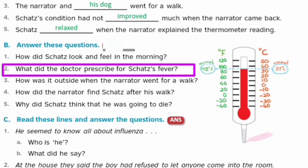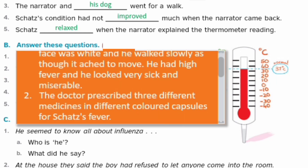Next question: What did the doctor prescribe for Skets's fever? Skets ke fever ko lekar doctor ne kya prescribed kiya? Answer: The doctor prescribed three different medicines in different colored capsules for Skets's fever. Doctor ne three different medicines, three different colored capsules mein Skets ke fever ke liye prescribe kiya.